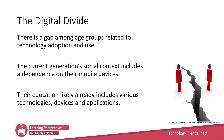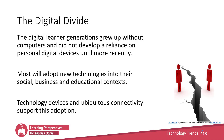But there's a digital divide — a gap among age groups related to technology adoption and use. The current generation's social context includes a dependence on their mobile devices as part of their lifestyle. We can see that their education likely already includes various technologies, devices, and applications supporting their future dependency on technology. The digital learner generations grew up without computers and developed their reliance on personal digital devices as adults. The proliferation of smart devices leads most to adopt these new technologies into their social, business, and educational contexts. Technology devices and ubiquitous connectivity help support and drive this adoption.